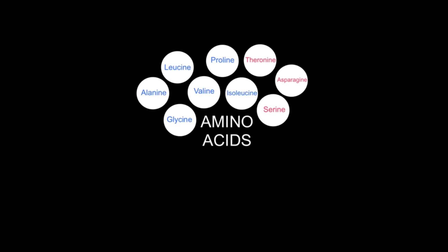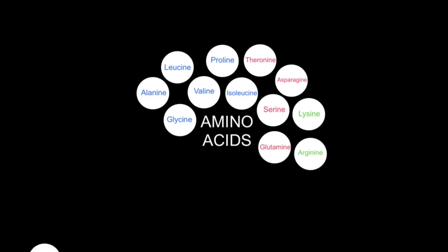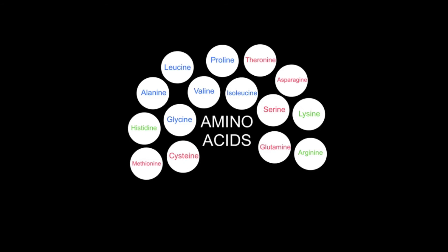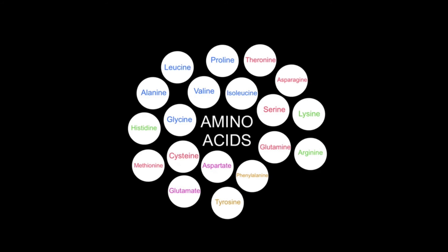When polypeptides are made, they're made by joining different amino acids together. There are a possible 20 amino acids that we're showing you here that you can put together in a variety of orders in order to create the polypeptide chain.